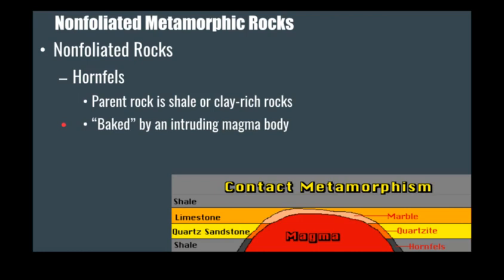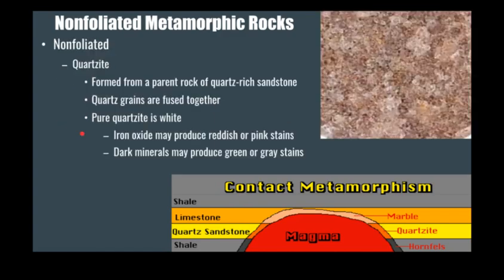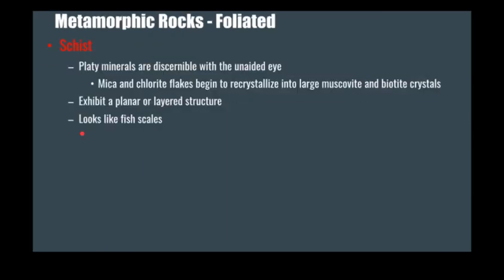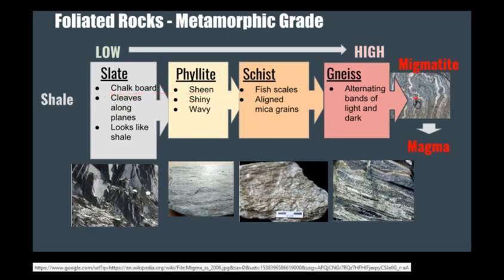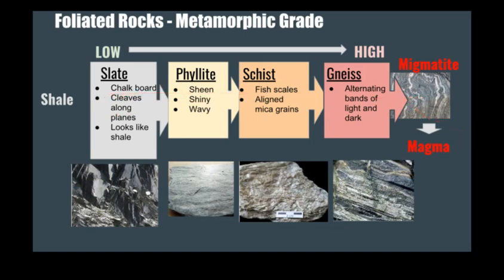That is it for identifying metamorphic rocks. Something to note is that with foliated metamorphic rocks, you can always skip grades — it doesn't necessarily always make this progression from slate to gneiss. I hope that was helpful, and please do follow the page if you're interested in learning more. Thanks.